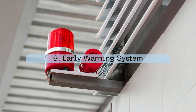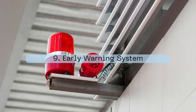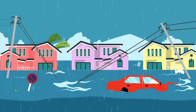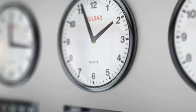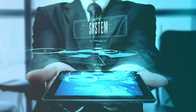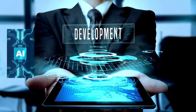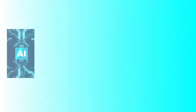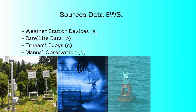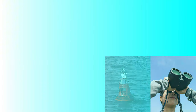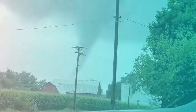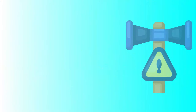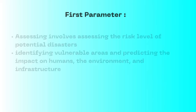Early Warning Systems (EWS) play a crucial role in predicting natural disasters, issuing timely alerts to safeguard lives and reduce damage to communities and infrastructure. By utilizing advanced AI technology, comprehensive risk assessments, and data from observation instruments and satellite imagery, EWS allows for proactive measures to be implemented, ensuring residents and tourists are well prepared for approaching hazards like storms, cyclones, and tsunamis. An effective early warning system should have at least four observation parameters.